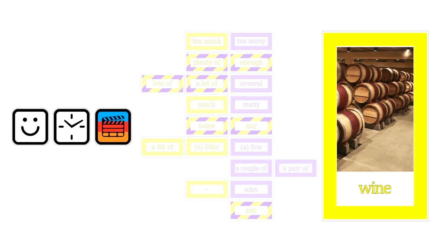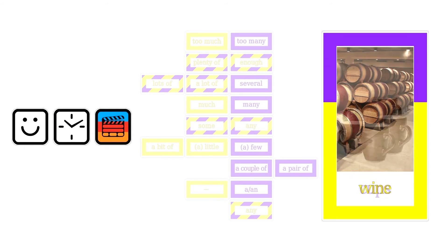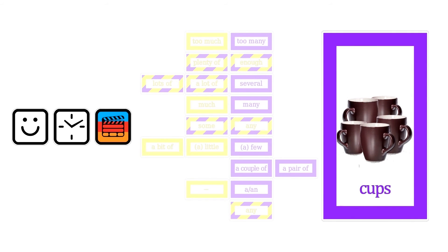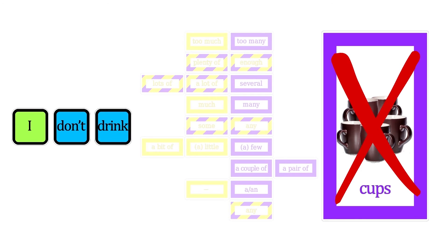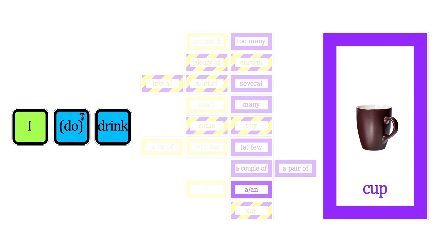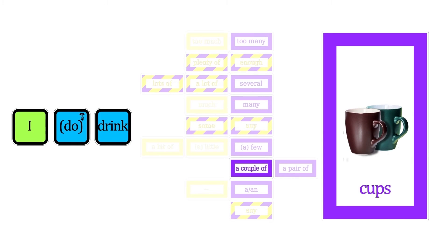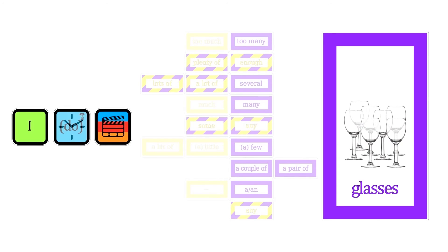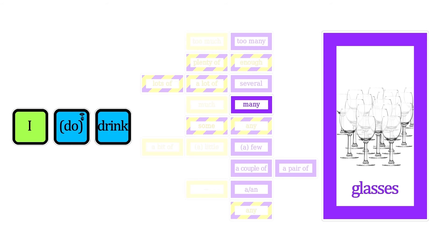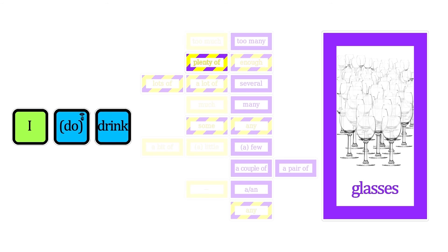But we use the container to count coffee or wine. One cup of coffee. Two cups of coffee. I know Spanish speakers tend to count coffee or wine without it, so let's see how it works. I don't drink any cups of coffee. I drink a cup of coffee. I drink a couple of cups of coffee, or a pair of cups of coffee. I drink a few cups of coffee. I drink some glasses of wine. I drink many glasses of wine. I drink several glasses of wine. I drink a lot of glasses of wine. I drink lots of glasses of wine. I drink enough glasses of wine. I drink plenty of glasses of wine. I drink too many glasses of wine.